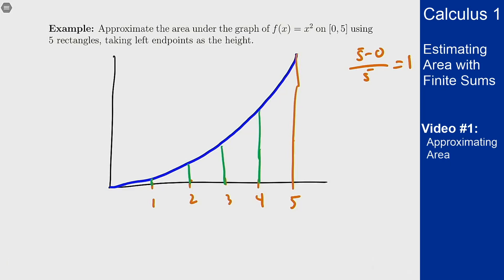Now I'm going to take left end points as height so for each little rectangle I will draw a horizontal line across at where the left endpoint crosses this graph. So here I just get zero, then here I'll get one, then here it'll come across where two hits and where three hits and where four hits. I want to find the total area of these rectangles.